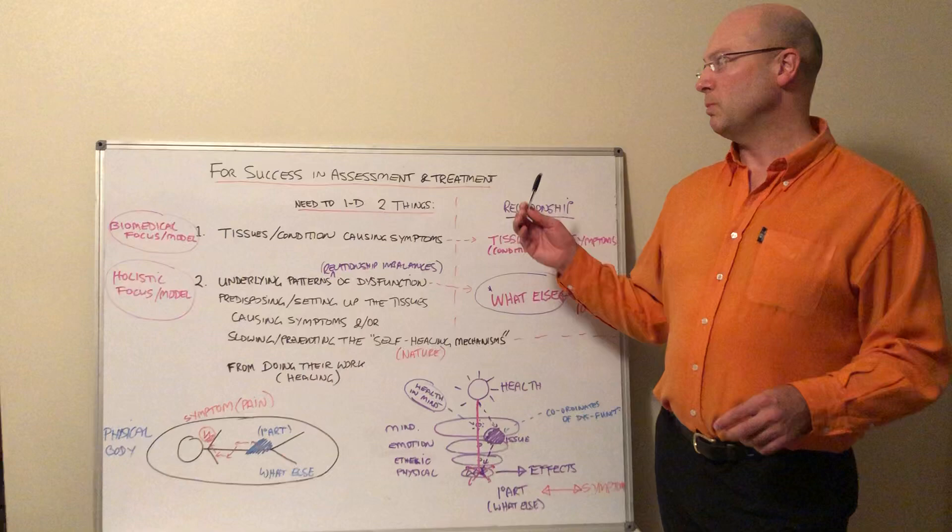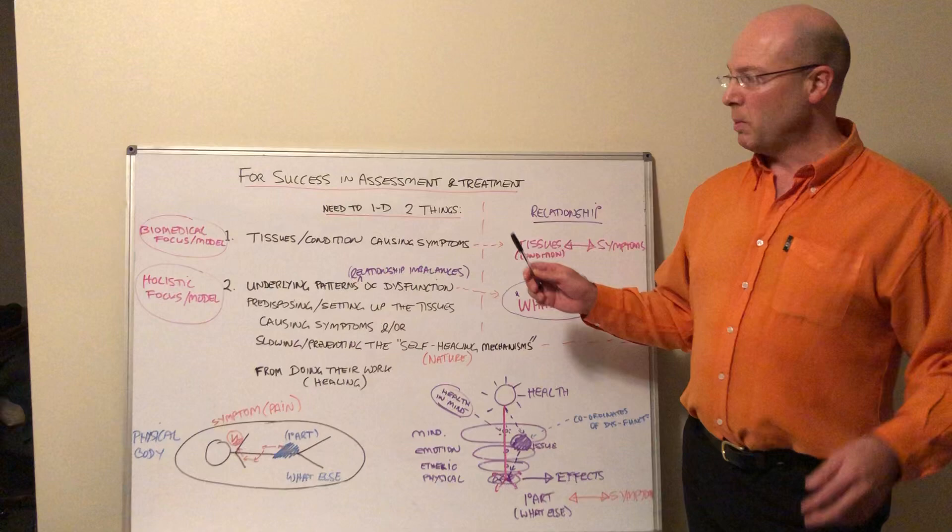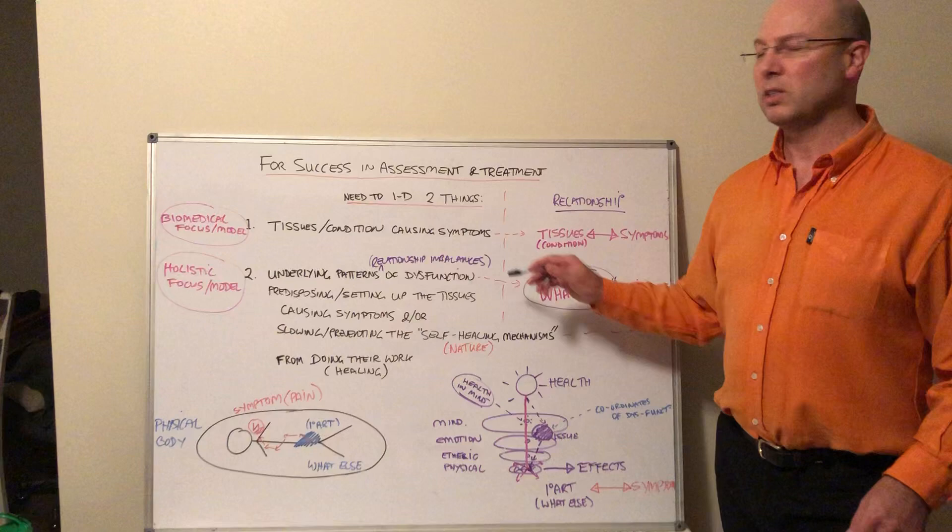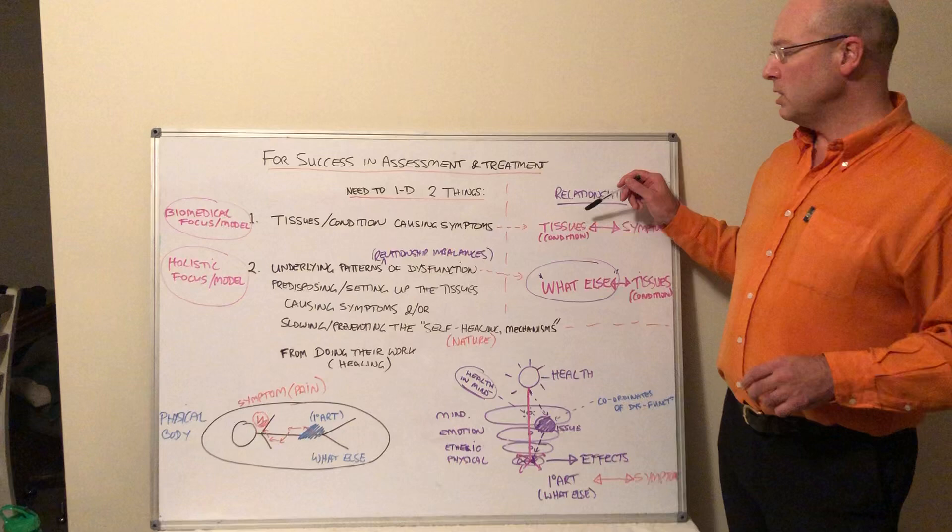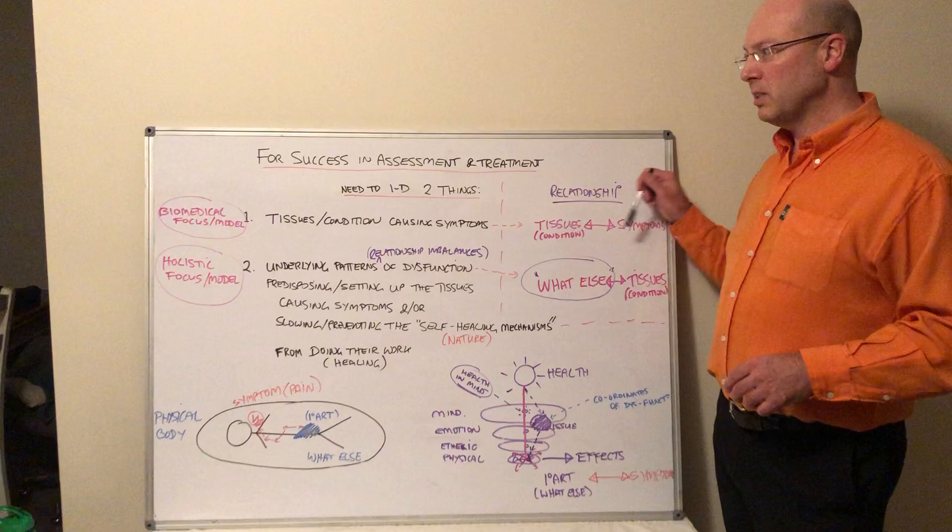When you're coming in for assessment and treatment, there are two things you want to identify in clients when they're coming in with pain. The first one has more of a biomedical emphasis or focus—it's the tissues or conditions causing symptoms. You'll always assess a person to work out what's causing their symptoms, whether it be pain or something else, and the relationship you're investigating is between the tissues or the condition and the effects or symptoms that a person is feeling.